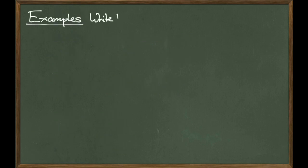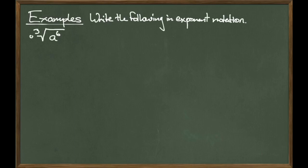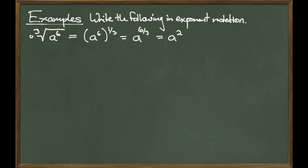Let's go through some examples. Write the following in exponential notation — we're given something in radical notation, so let's translate to exponential. Pro tip: these are common test questions for a college algebra class, so definitely make sure you understand. I'll first take care of the cube radical and write that in exponential notation, so I get a to the 6 raised to the 1-third power. Since I have a power to a power, I will multiply those exponents together to give me a to the 6 over 3, and this simplifies down to a to the 2nd.